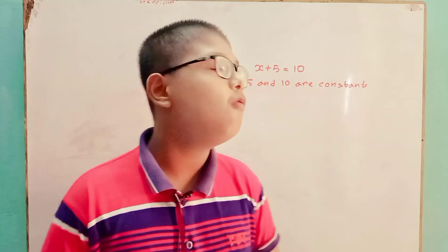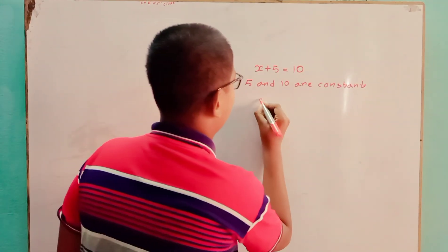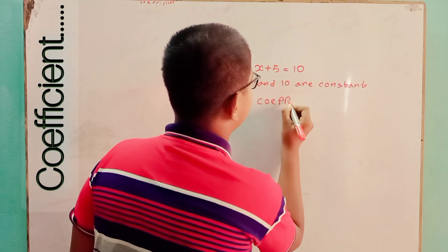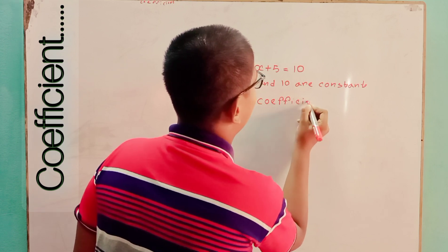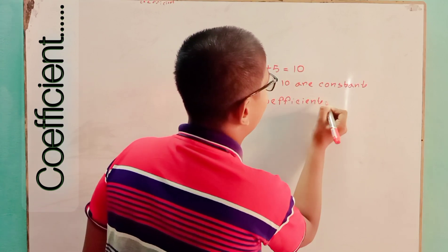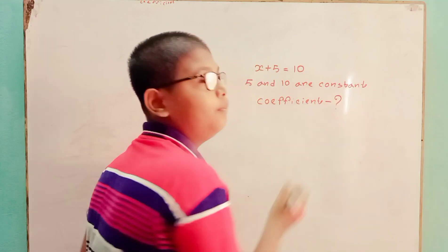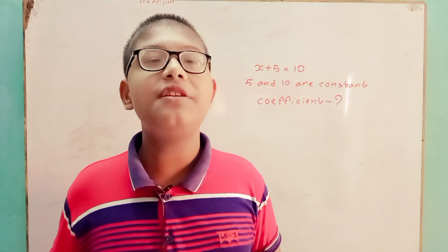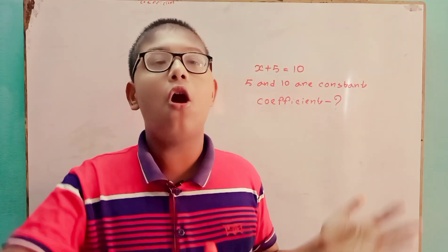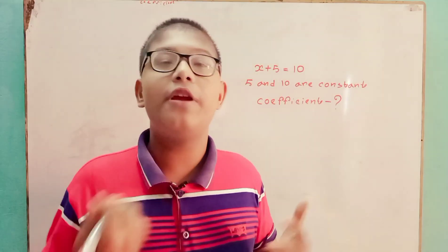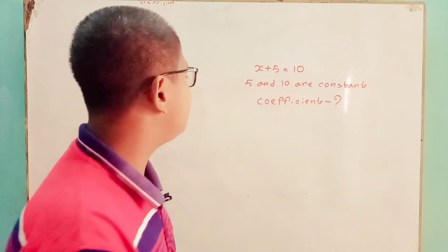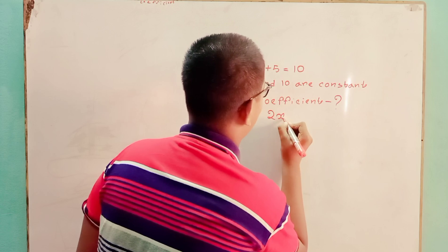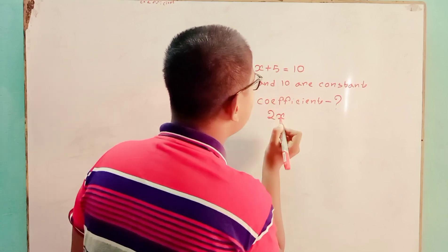Coefficient. What is a coefficient? A coefficient is an integer that is written along with a variable, or it is multiplied by the variable. For example, in the term 2x, here 2 is a coefficient.